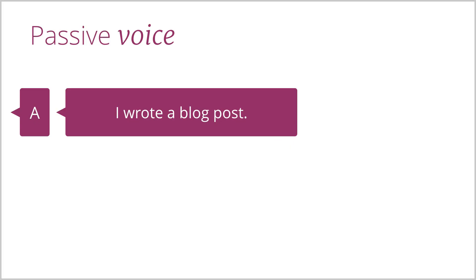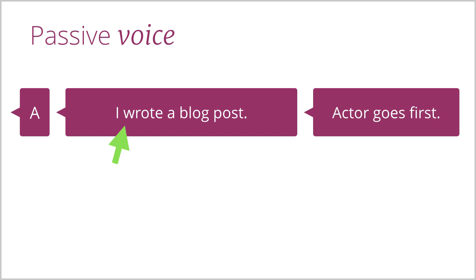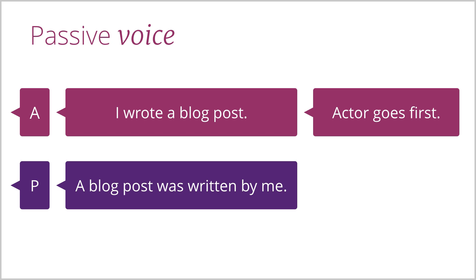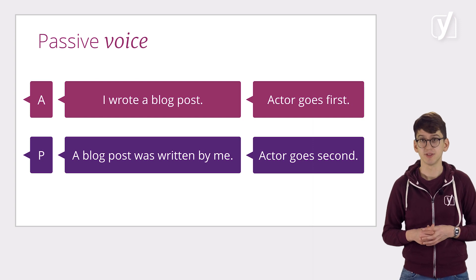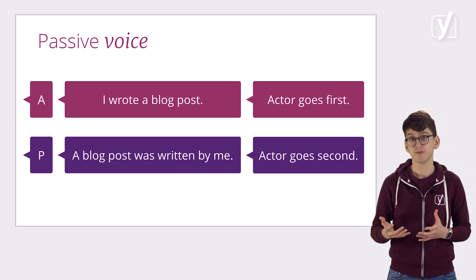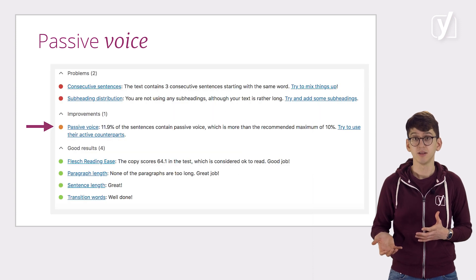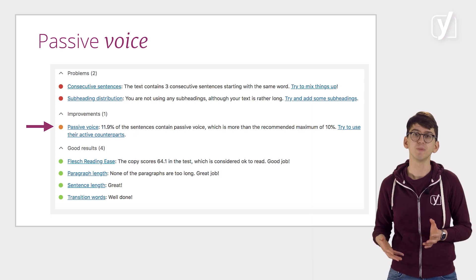Another thing to watch out for when crafting your sentences is not to overuse the passive voice. The passive voice is a grammatical construction that usually makes your message less clear and results in distant writing. Take this active sentence: 'I wrote a blog post.' In this sentence, I am the one doing the action. In active sentences like this, the actor goes first and the one undergoing the action goes second. Its passive equivalent would be: 'A blog post was written by me.' Here, the thing undergoing the action goes first and the actor goes second. This results in a less natural sentence structure. Also, it's wordier. We advise you to avoid passive sentences if you can. The Yoast SEO plugin will detect passive sentences and let you know if you're using too many of them.